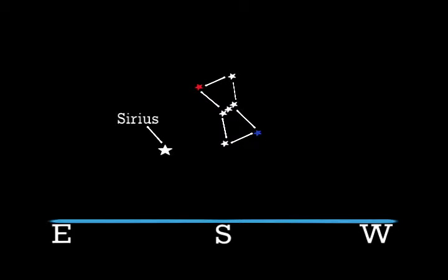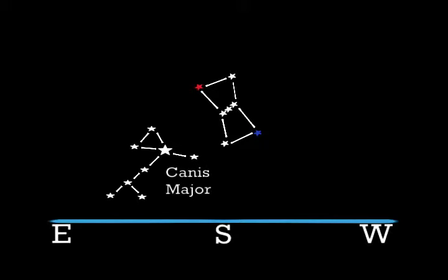It'll lead you to the brightest star in our nighttime sky, Sirius. Sirius is also called the dog star because it's part of the nose of Canis Major, the large dog.